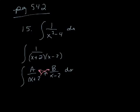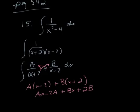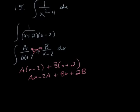So I've got A times x minus 2, plus B times x plus 2. That gives me Ax minus 2A plus Bx plus 2B, and now I've got to figure out what my equations are equal to. Remember that your numerator was just 1.